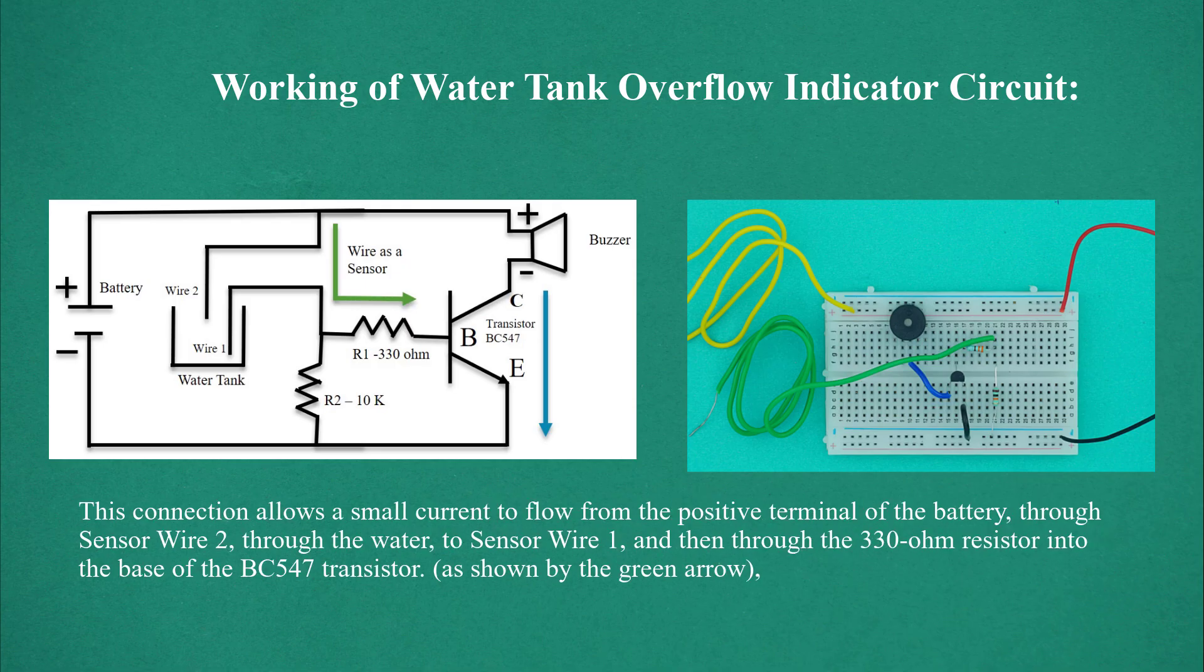This connection allows a small current to flow from the positive terminal of the battery, through sensor wire 2, through the water, to sensor wire 1, and then through the 330 ohm resistor into the base of the BC547 transistor, as shown by the green arrow.